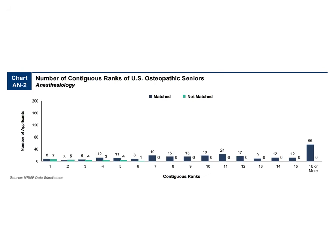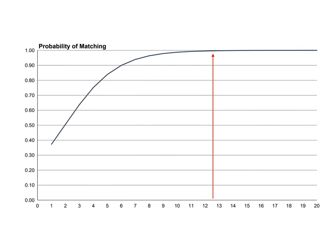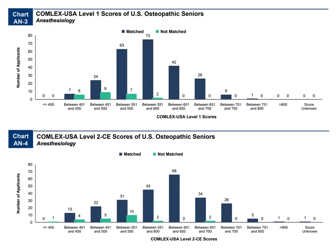The contiguous ranks chart for DOs shows that, just like for MDs, you overwhelmingly need 16 or more ranks. If you're preparing for interview season as a DO going into anesthesiology, apply to a lot of programs — you'll need to rank around 15 or more. The probability of matching chart shows that if you're a DO student and want a 100% probability of matching, you need to rank at least 12.5 programs. For Comlex Level 1 and Level 2, your best chance of matching comes when Level 1 is between 551 and 600, and Level 2 is between 601 and 650.